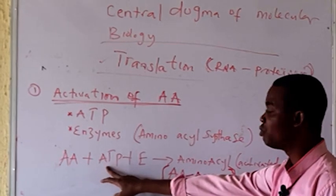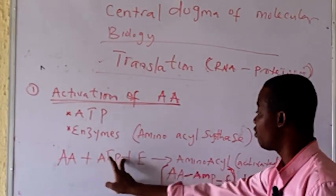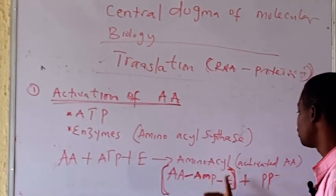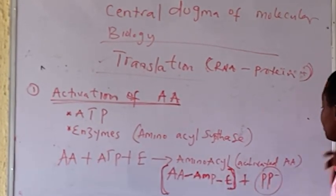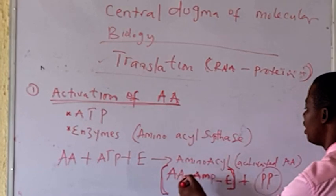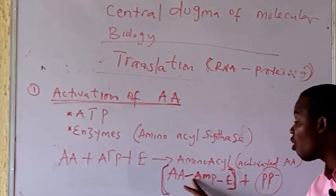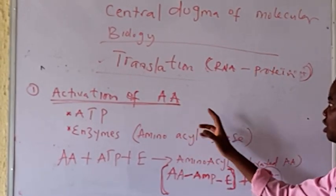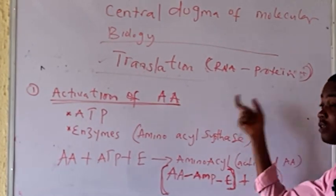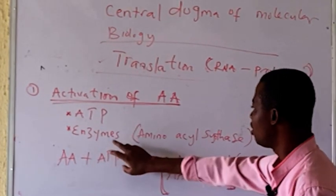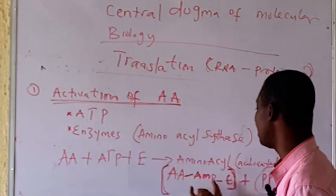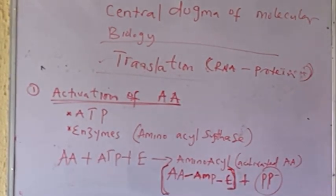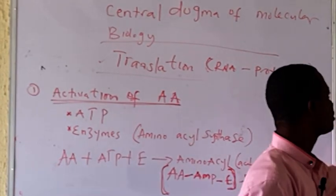In ATP we have three phosphates — adenosine triphosphate — but here we have AMP, monophosphate, so we are left with two phosphates which are released as inorganic phosphate. So AA, AMP, and enzyme together are called activated amino acid. This is the first step of translation: activation of amino acid.